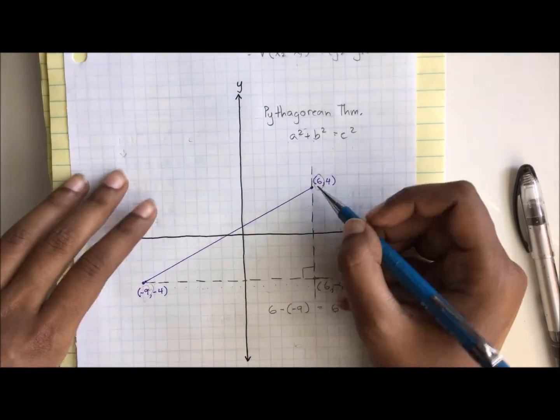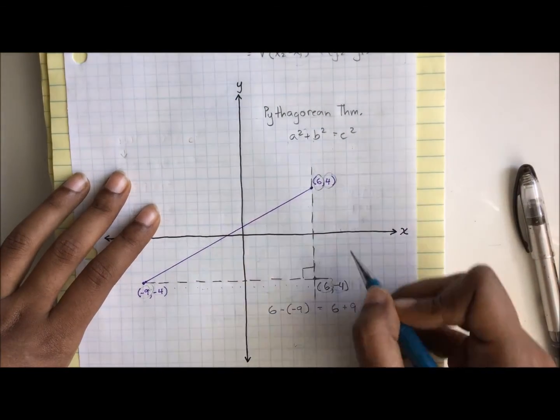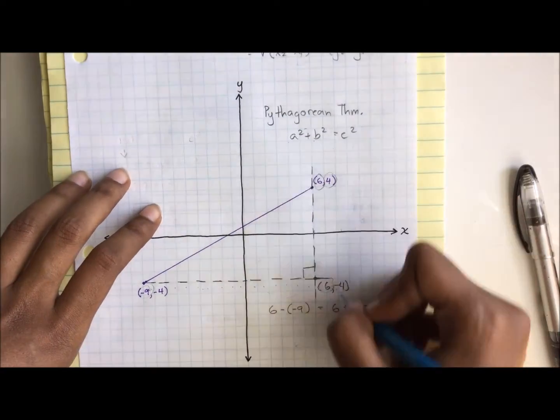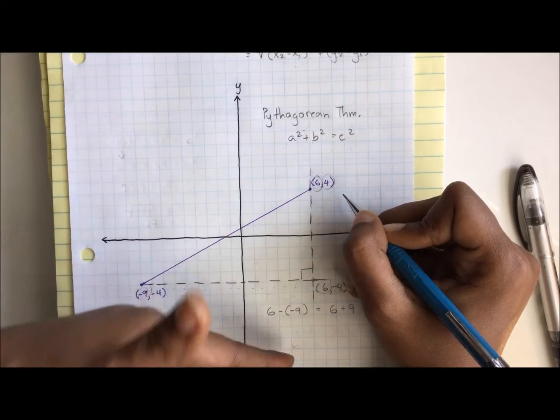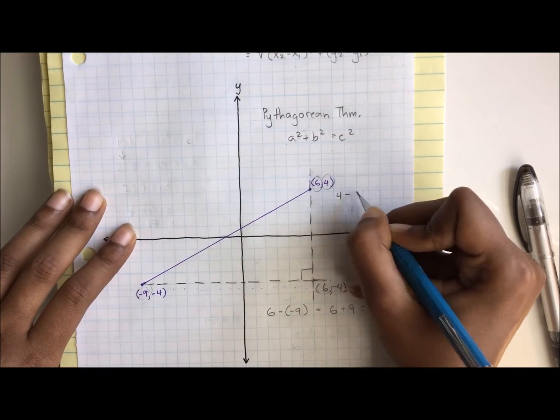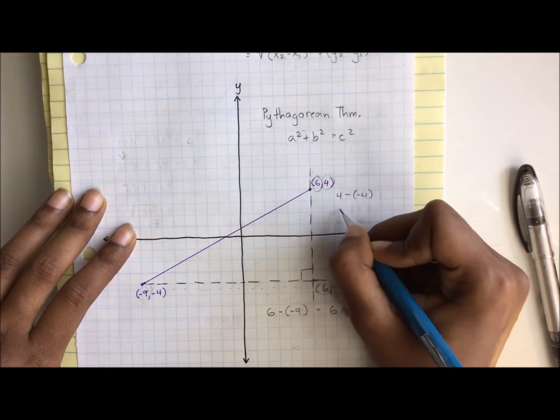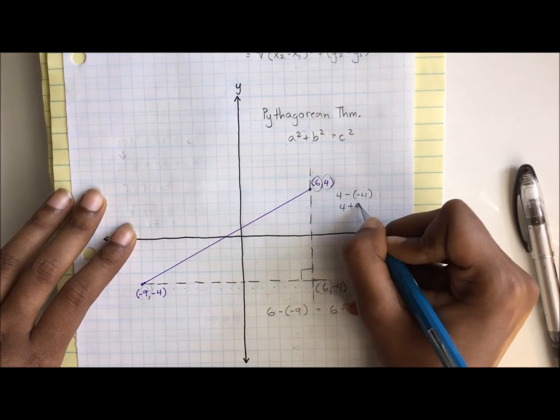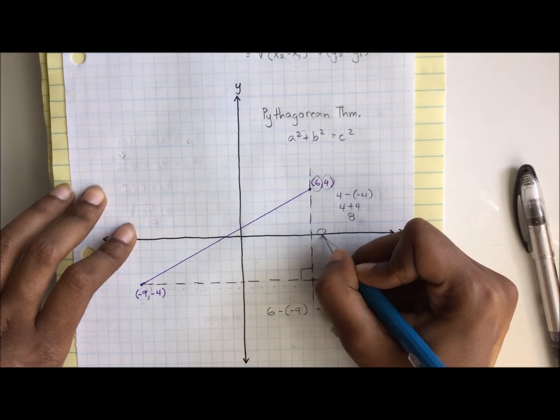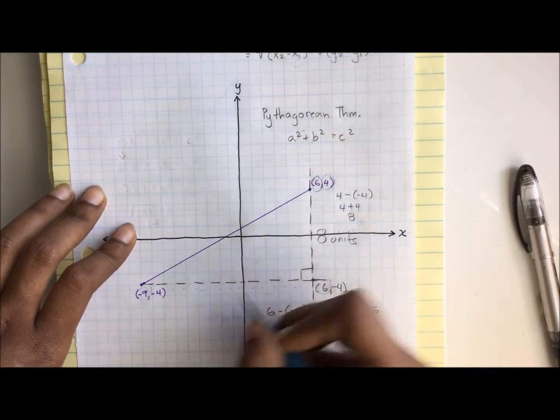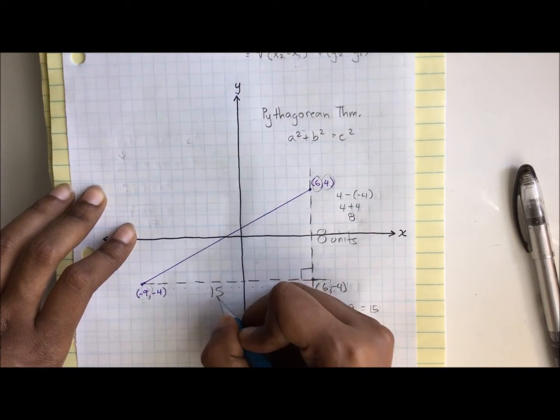Let's do that for the vertical change. We go from negative 4 to 4, or 4 to negative 4, whichever direction you want to read. I'm going to start from top to bottom. 4 minus negative 4 gives us 4 plus 4. That gives us 8. So that means we have a vertical change of 8 units. We have a horizontal change of 15 units.